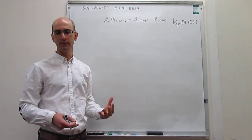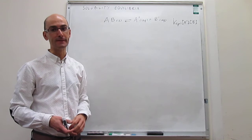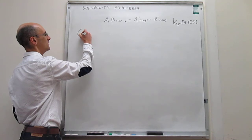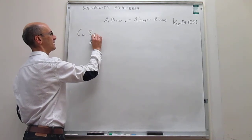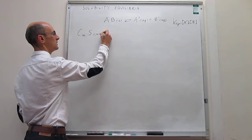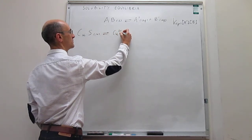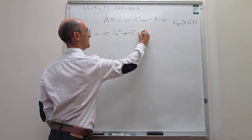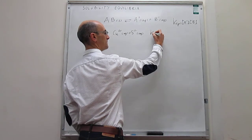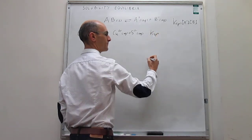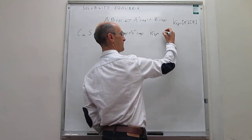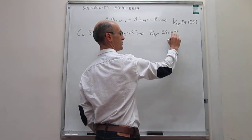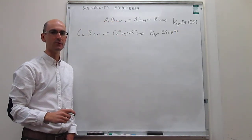Let's do a couple of examples to figure out how this works numerically. Let's think about the copper sulfide equilibrium. Copper sulfide is an extremely insoluble salt, with the following equilibrium: Cu²⁺ (aqueous) plus S²⁻ (aqueous), and the solubility product has a value of 8.5×10⁻⁴⁵. That already indicates this is a very insoluble salt.